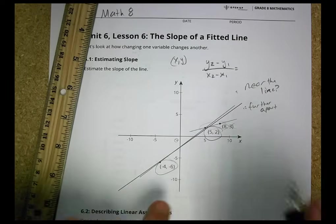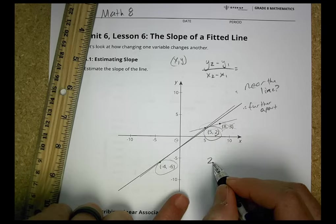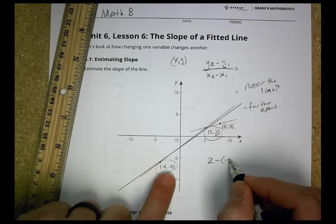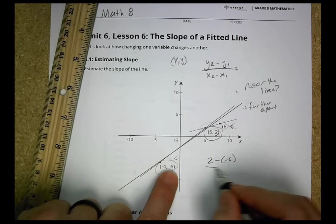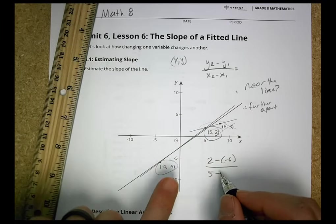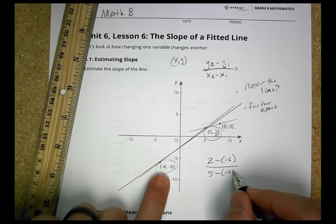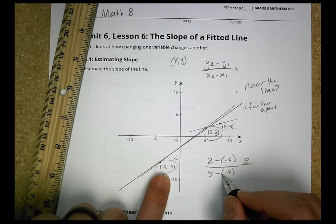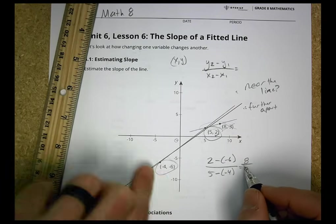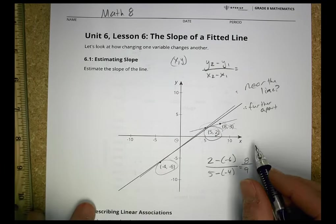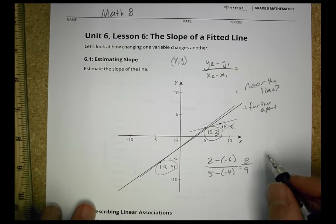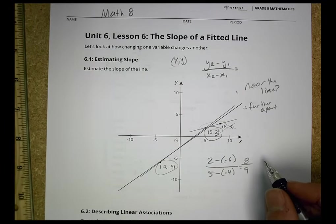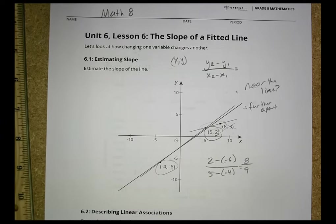So we're going to use our y2 value, which is this one, 2, minus our y1 value over our x2 value minus our x1 value. And 2 minus negative 6 is about 8. And 5 minus negative 4 is about 9. So we'd estimate the slope to be somewhere near 8 over 9 or somewhere near about 1. Again, just an estimate for what do you think it's going to be. All right? So I would say somewhere about a slope of 1.